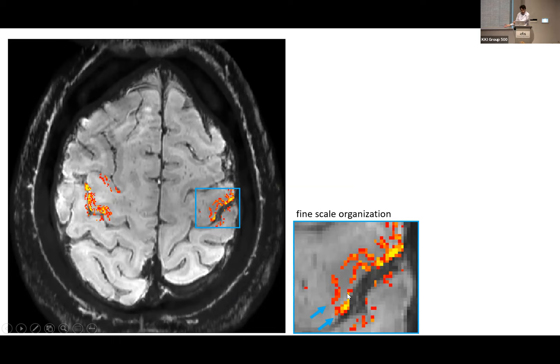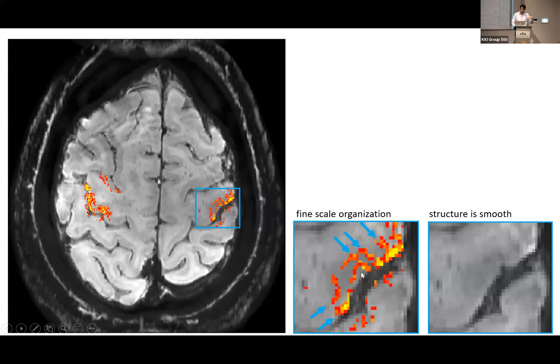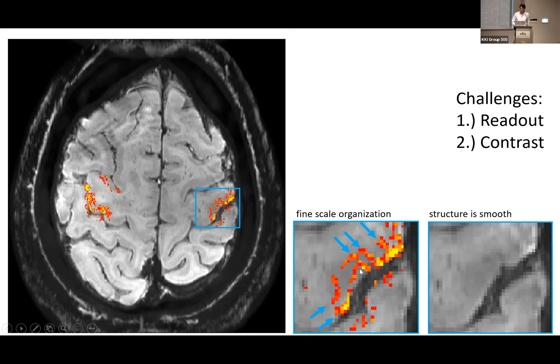There's also other structure, for example pillar-like stripes that not many people have seen so far — we're not sure if they are vascular or neural in origin. This definitely shows us that in functional responses there's a lot of fine-scale structure. When you look at the EPI underlay, we now have about 10 voxels across cortical depth. To get to these resolutions, there are two important challenges I'd like to discuss: first the readout, and then the contrast.